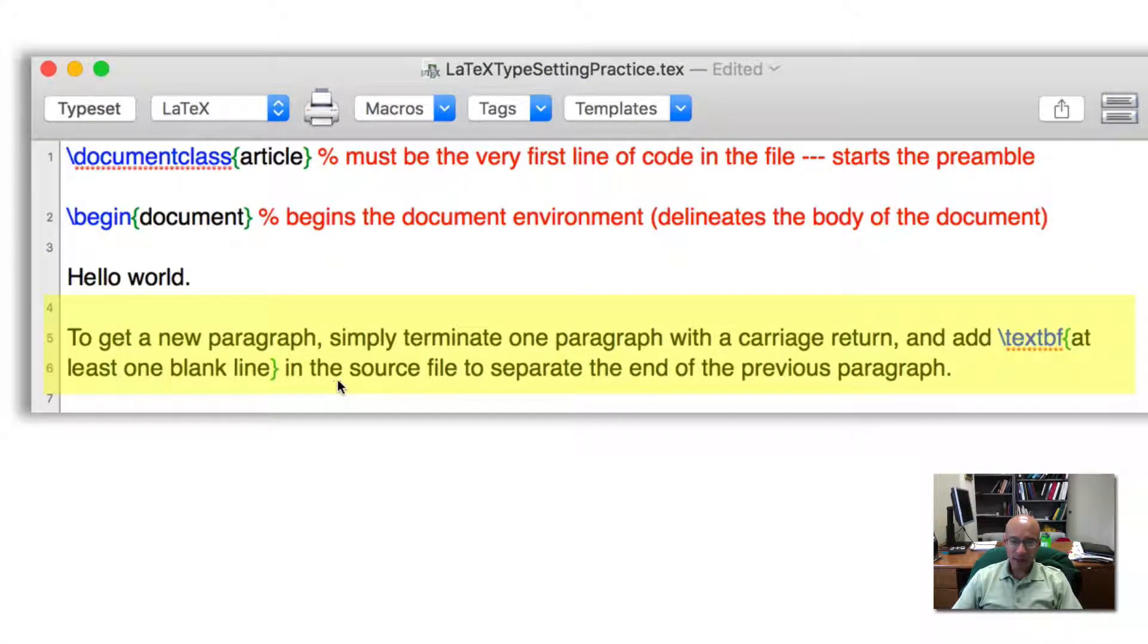And I note that paragraphs are delineated by one blank line. So I add a carriage return after hello world, and another carriage return for a blank line. And then LaTeX regards this as a new paragraph, and typesets it as such.